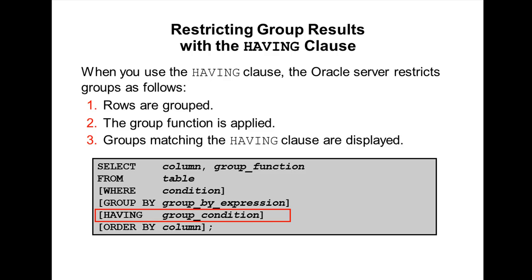How Oracle performs the steps: first, Oracle rows are grouped and the group function is applied to each group. Then groups that match the criteria in the HAVING clause are displayed. First, rows are grouped based on the WHERE condition and GROUP BY clause, then the group function is applied, and then groups matching the HAVING clause criteria are displayed.